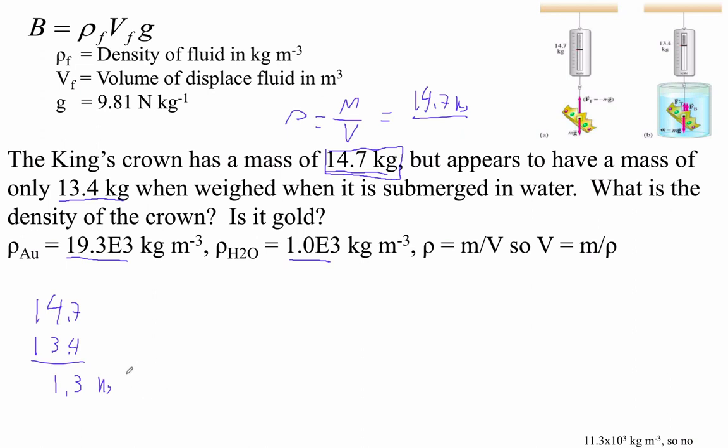There we go, 1.3. This 1.3 kilogram, that's the mass of the water displaced. Okay, that makes sense. So objects, when you put them in the water, they will displace a mass of water that fits their shape. And so that's 1.3 kilograms, is the mass of the water displaced.